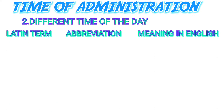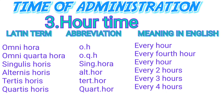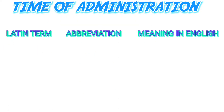Next is the time expressed in hours. 'Omni hora,' abbreviated OH, means every hour. 'Omni quarta hora,' abbreviated OQH, means every fourth hour. 'Singulis horis,' abbreviated sing. hor., means every hour. 'Alternis horis,' abbreviated alt. hor., means every alternate hour. 'Tertiis horis,' abbreviated tert. hor., means every three hours. 'Quartis horis,' abbreviated quart. hor., means every four hours.